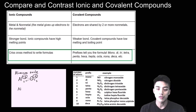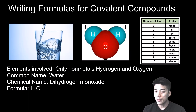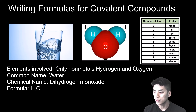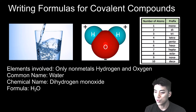You won't rely on the crisscross method because you don't have to. All you do is put the prefix in front of the first element, put the prefix in front of the nonmetal, and then change the ending to -ide. When I look at this compound here, I notice that the elements involved are only nonmetals. We're looking at water, so we know that it's just hydrogen and oxygen, which makes it a covalent compound. I don't see metals anywhere, so I know by default this thing is probably covalent.